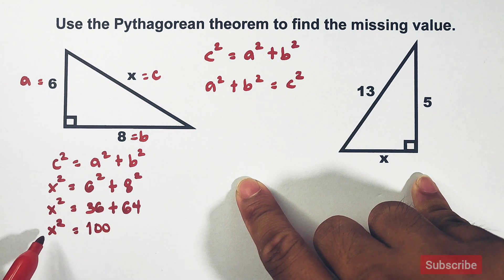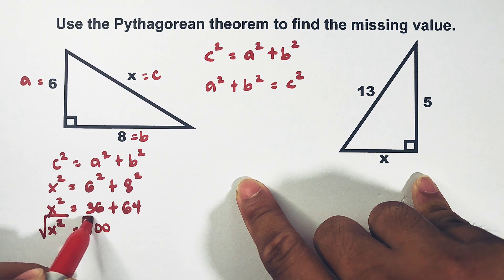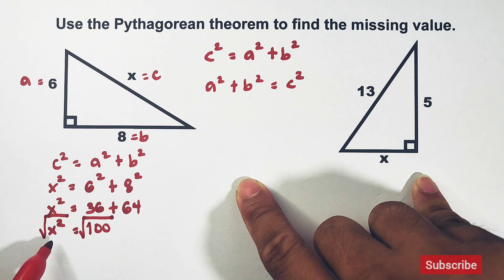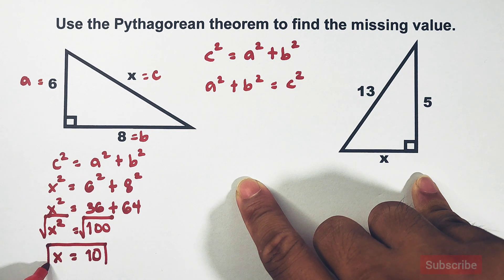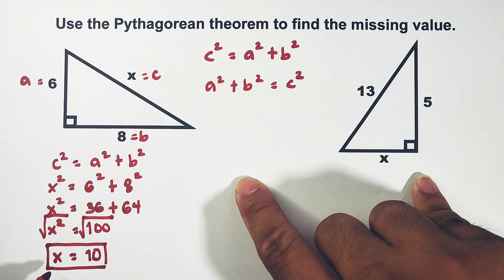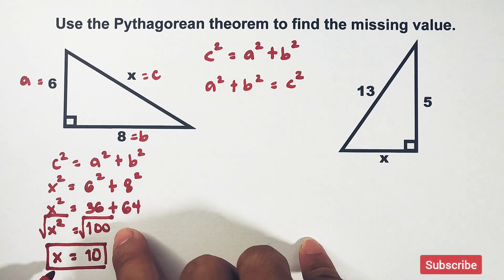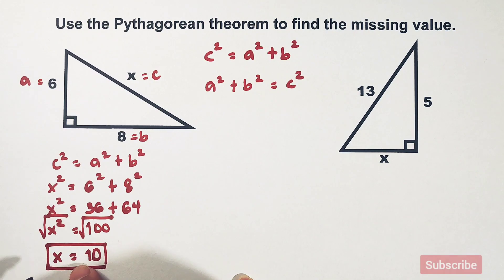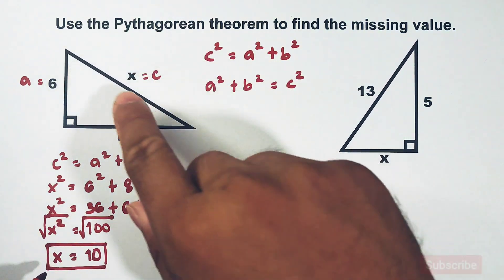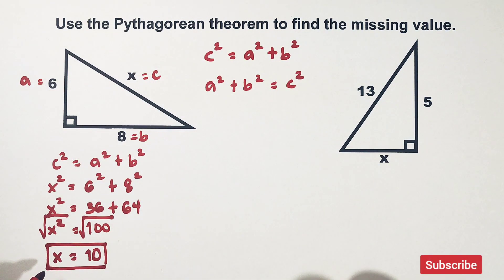To get the value of x, we extract the square root of both sides. The square root of x² is x, and the square root of 100 is 10. Notice we use only positive 10 — not negative — because x represents a length, and we are not allowed to use a negative number to represent the length of something.